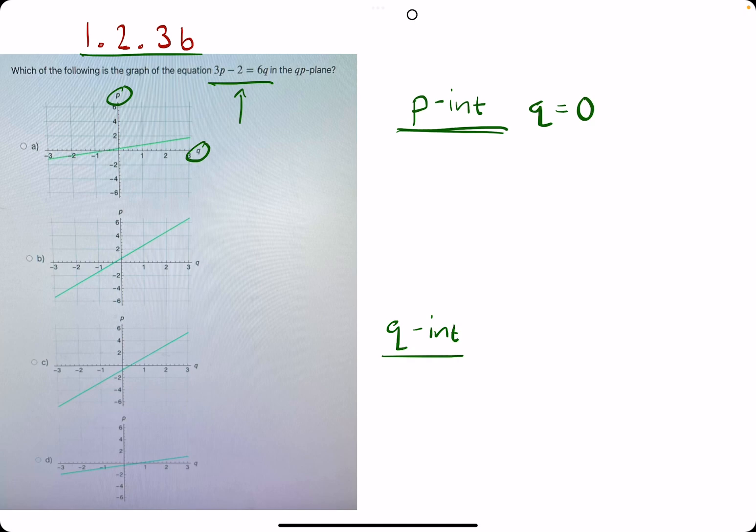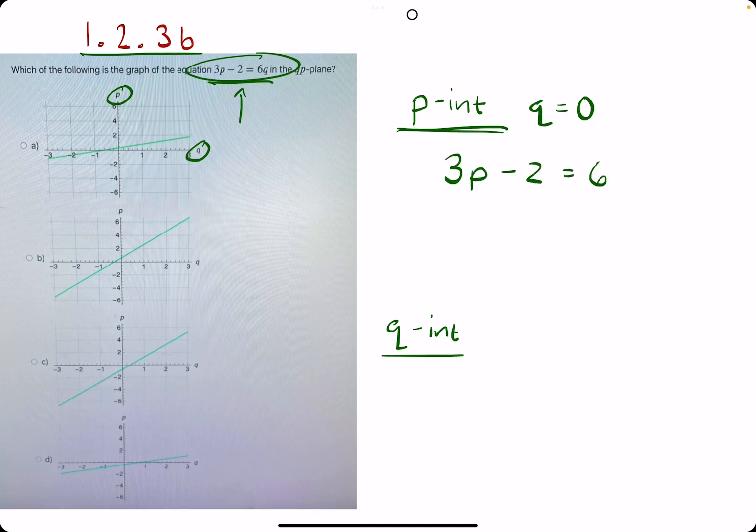For the p-intercept, we will plug 0 in for q in this equation. So 3p minus 2 equals 6 times 0 because we're plugging 0 in for q. 0 times 6 is 0, and we're solving for p.